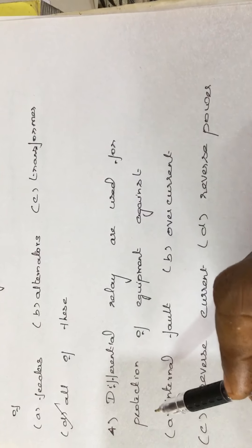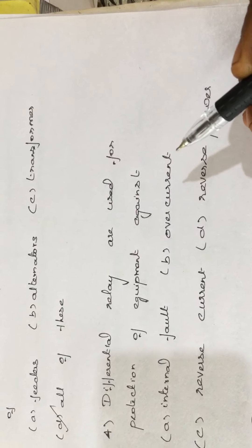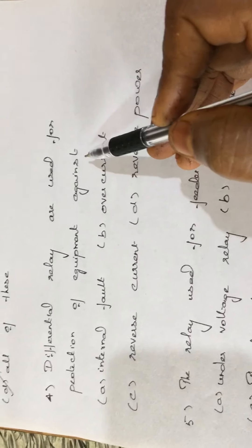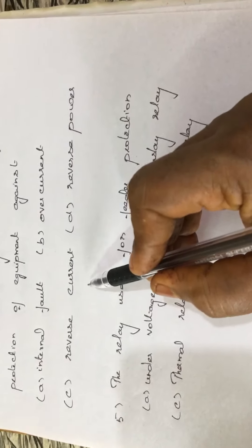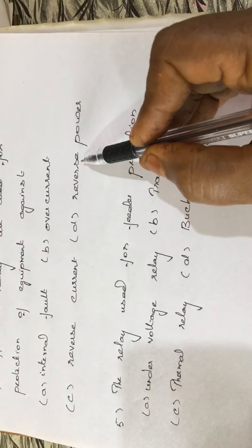Question number 4: a differential relay is used for protection of equipment against — Option A: internal fault, Option B: over current, Option C: reverse current, Option D: reverse power. The differential relay protects the equipment against the internal fault.